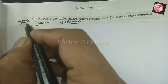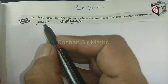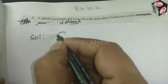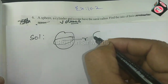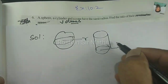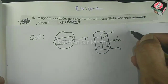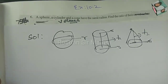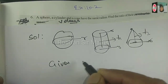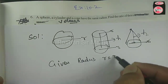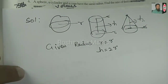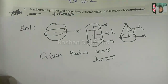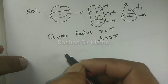This is a very important question for students. Question number 6: a cylinder and a cone have the same radius. The radius is the same — R is equal to R. We also have a sphere. We need to find the ratios of their volumes, so we use three formulas.